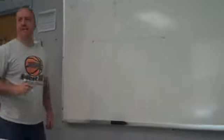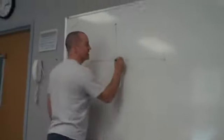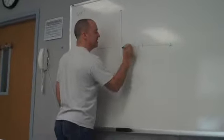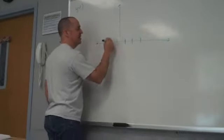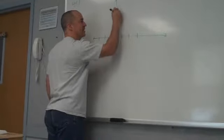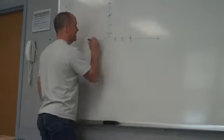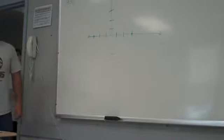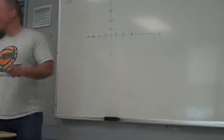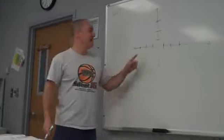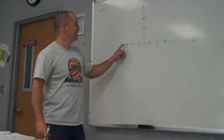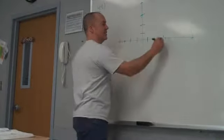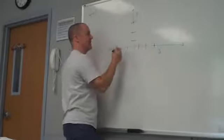It's a circle with radius 3. So does it therefore make sense that I would mark the x-axis at negative 3 and 3 and the y-axis at positive 3? Yes.